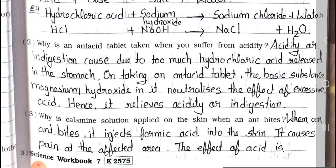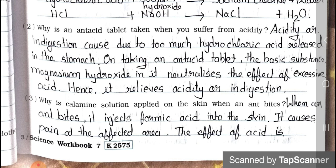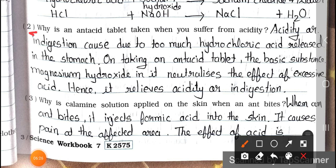Question number 2: Why is an antacid tablet taken when you suffer from acidity? Answer: Acidity or indigestion is caused due to too much hydrochloric acid released in the stomach. On taking an antacid tablet, the basic substance magnesium hydroxide in it neutralizes the effect of excessive acid. Hence, it relieves acidity or indigestion.